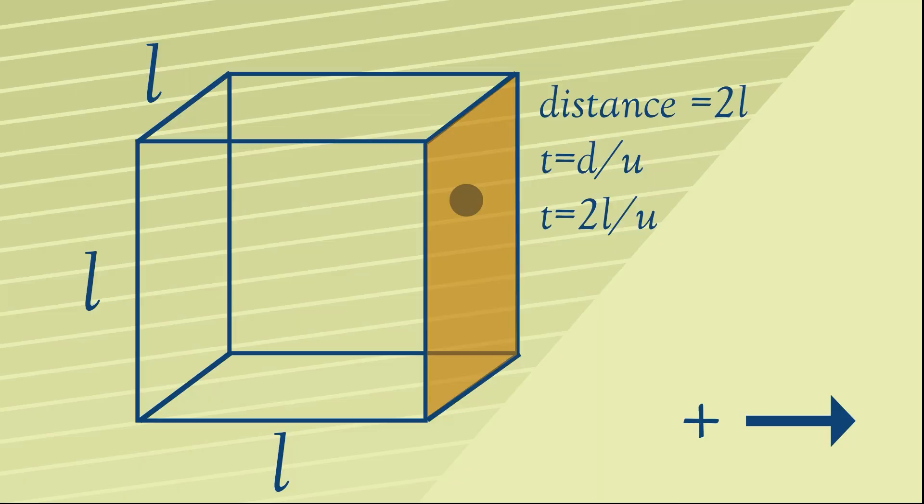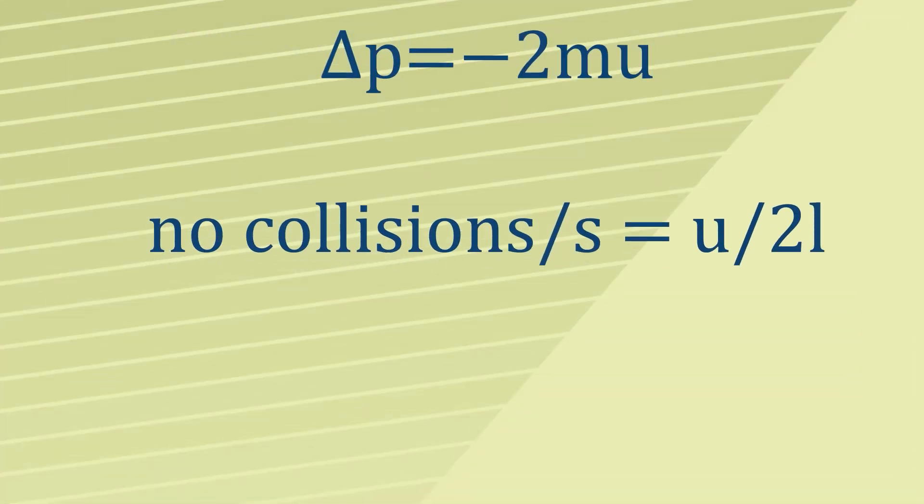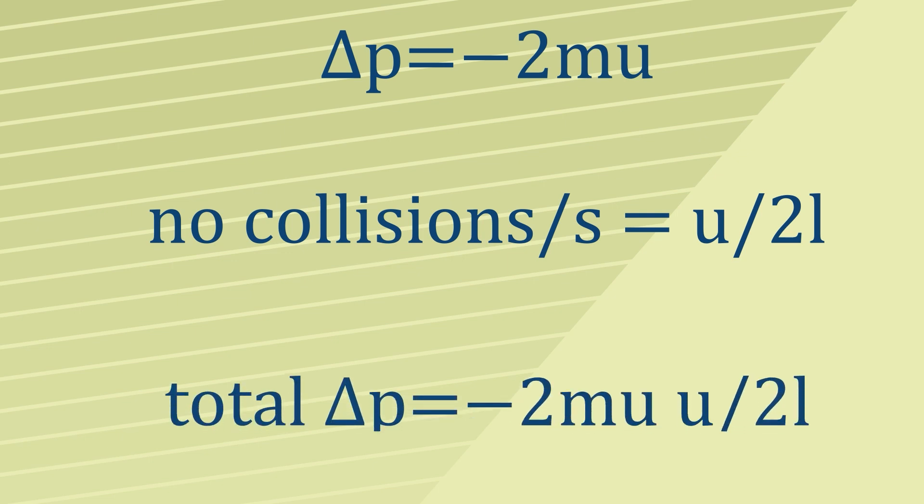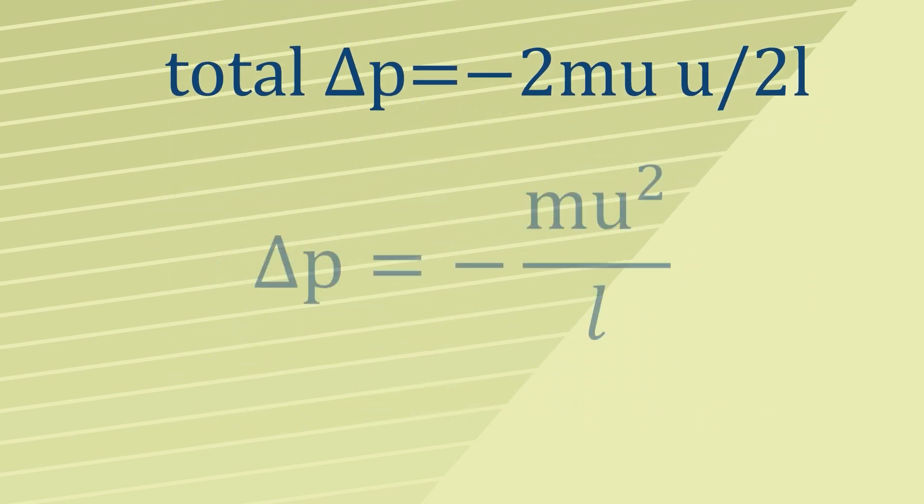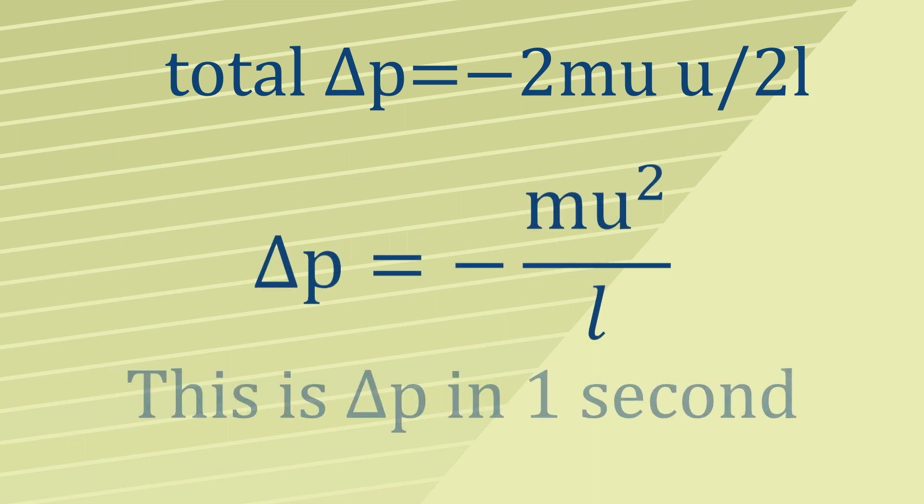In other words, the number of collisions in one second is going to be 1 over T, which equals u over 2L. Given that we have the momentum change in one collision and the number of collisions in one second, we can get the momentum change in one second, which works out as minus mu² over L.